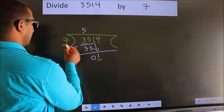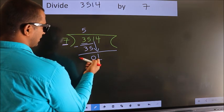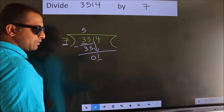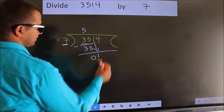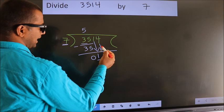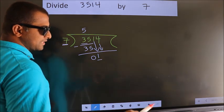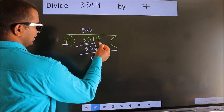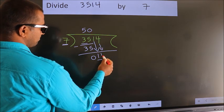Here we have 1. Here 7. 1 smaller than 7. So we should bring down the second number. And the rule to bring down the second number is put 0 here. Then only we can bring down this number.